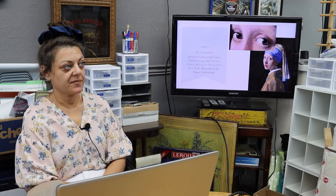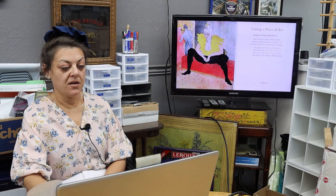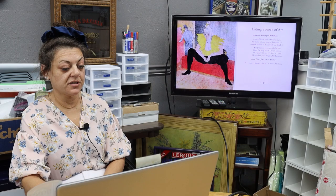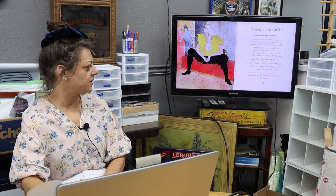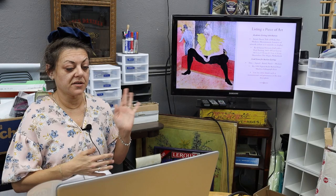When we list a piece of art, an academic listing includes the artist name, the title of the work, the date, the medium, measurements, and the location of the artwork where it's currently on display. For an auction listing, for our purposes, we want to put the date if known, signed if it is, artist name, and medium in the lead line. Then you want to put all of your other information in the description — the title of the piece, any other information about the artist that you know, and the medium.